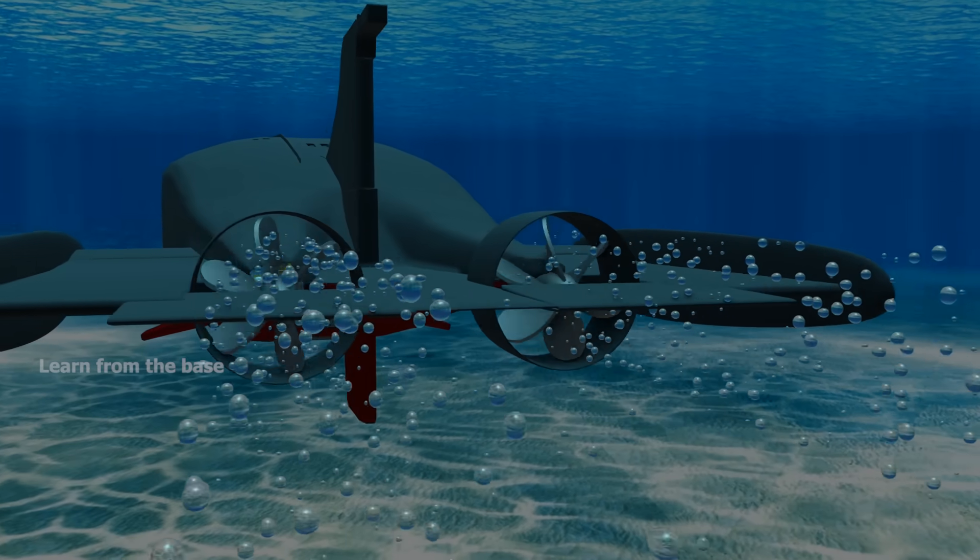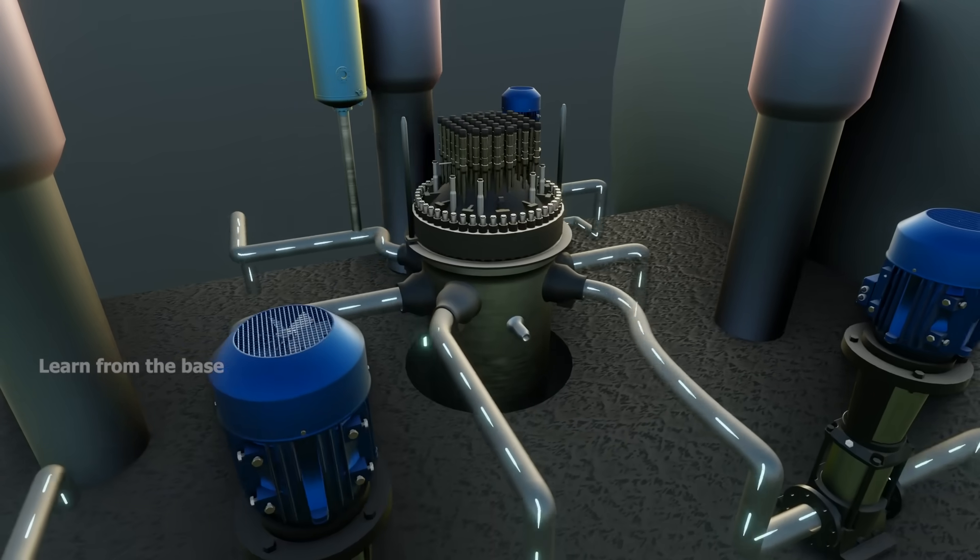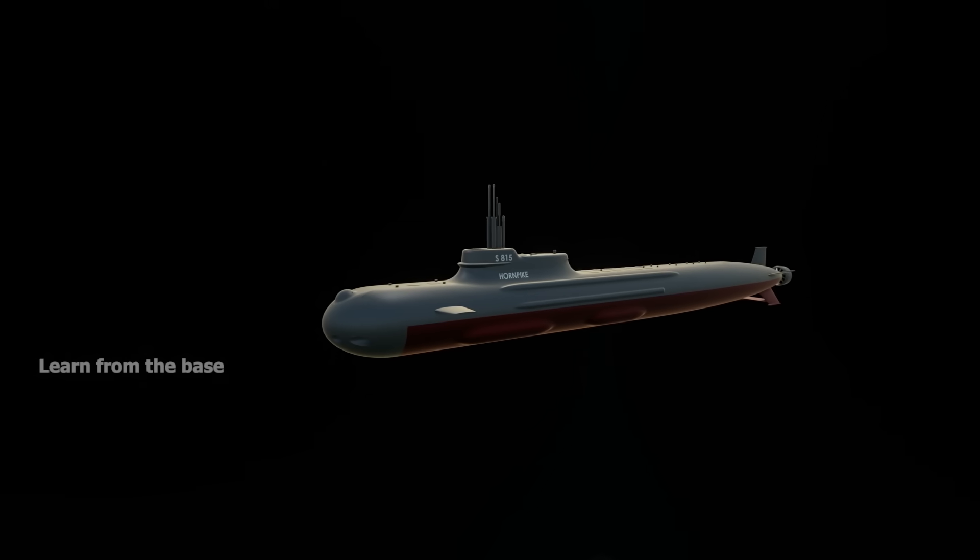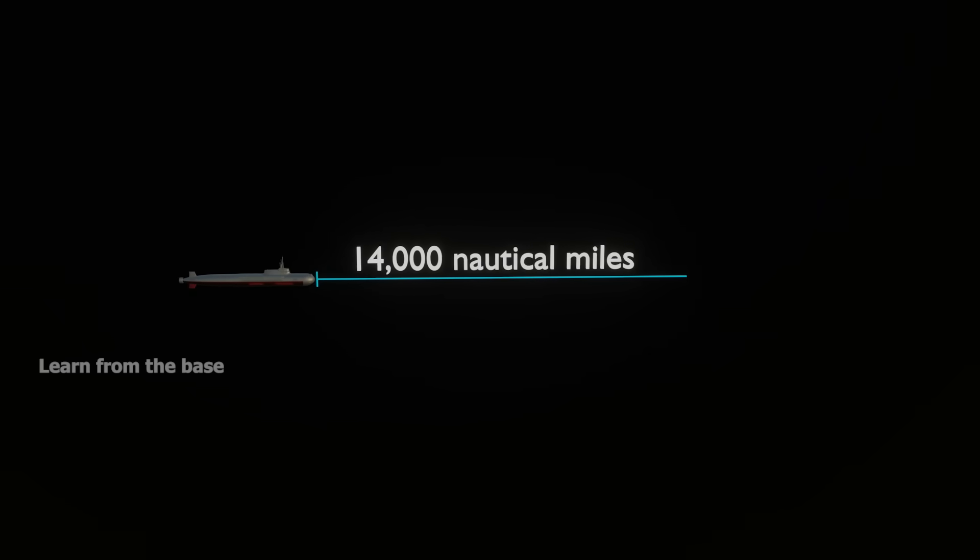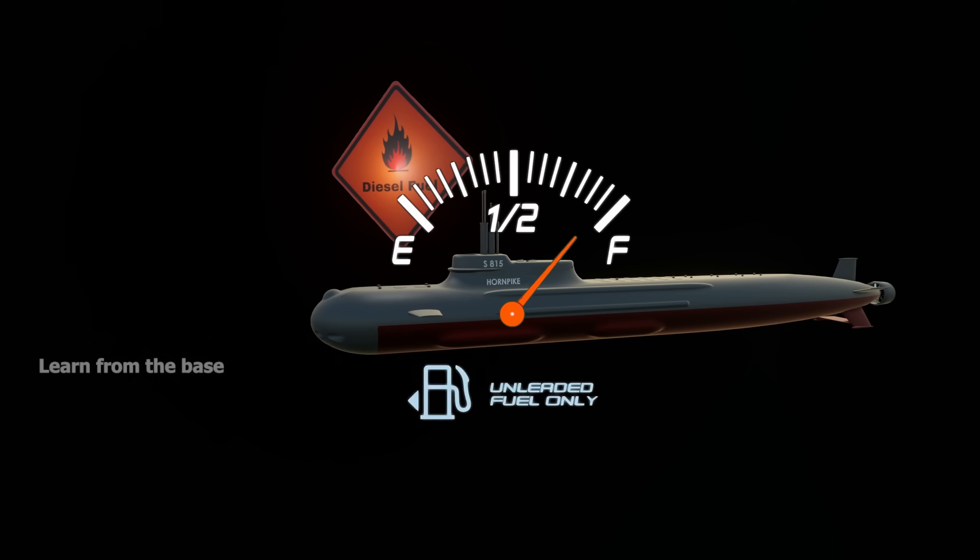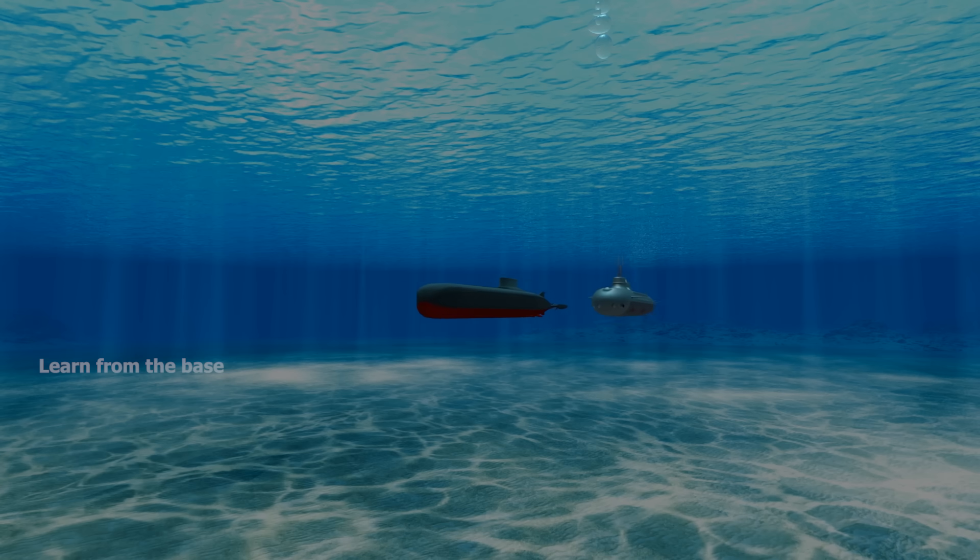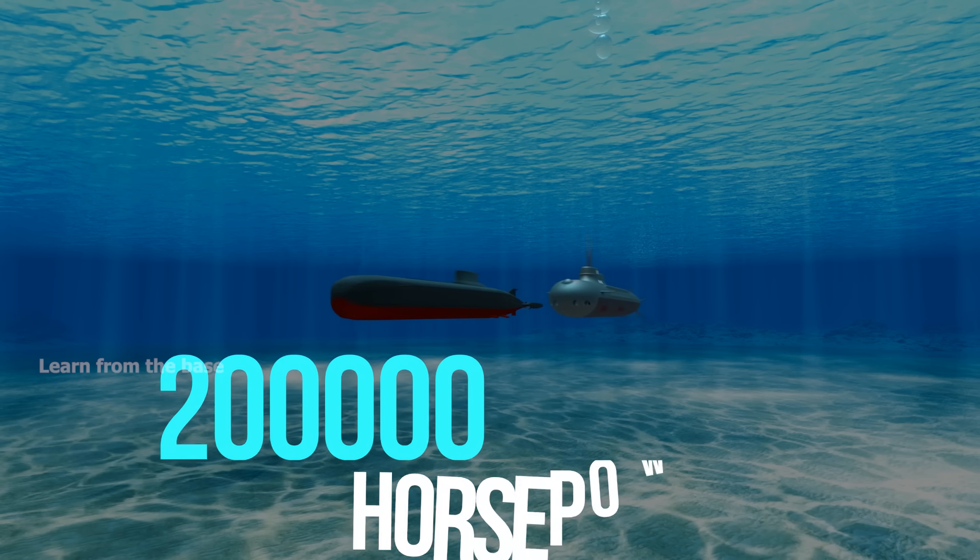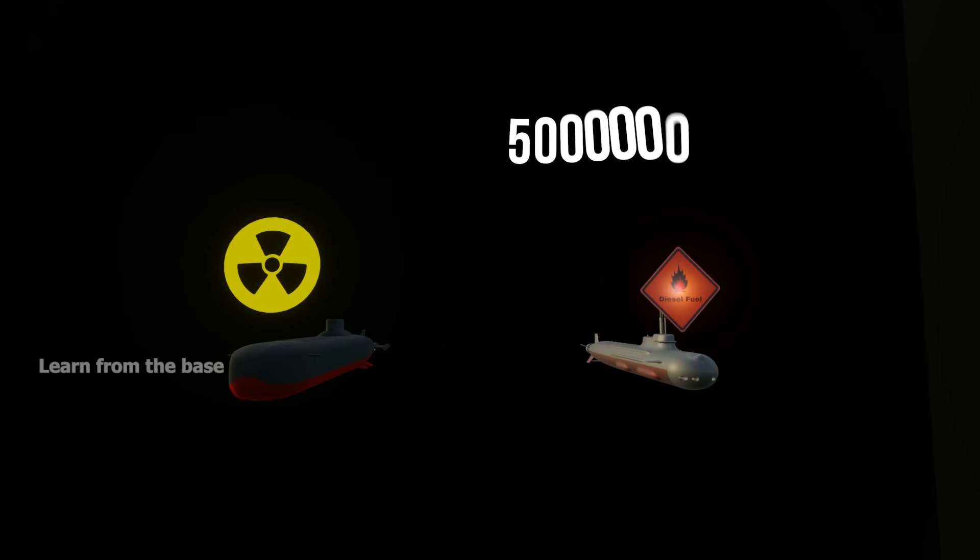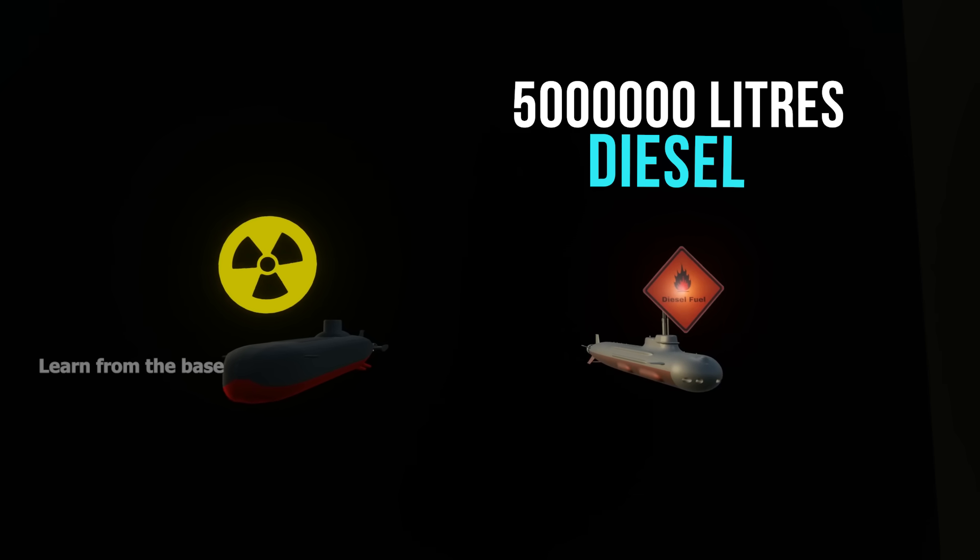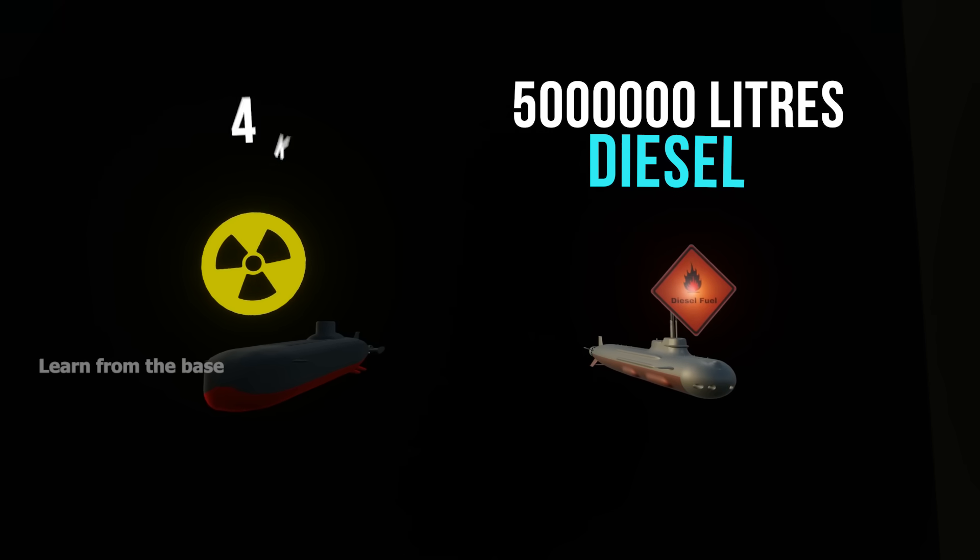Typhoon's propulsion system is powered by nuclear power. Some submarines have diesel-electric engines. A diesel submarine can travel a range of only 14,000 nautical miles before it needs to refuel. If you run each type of submarine with 200,000 horsepower non-stop for one week, the diesel engine would require 5 million liters of diesel fuel, while a nuclear submarine would require only 4 kilograms of enriched uranium.